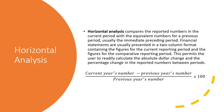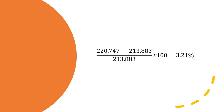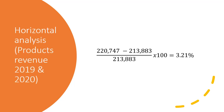Multiply by 100 so that you will see any increase or decrease in the performance of the company based on the previous year's number. In our example, in year 2022 we have 220 trillion 747 billion less 213 trillion 883 million, divided by the previous year's amount for products revenue, then multiply by 100. You will see 3.21%, which means comparatively this year there is an increase of 3.2%.